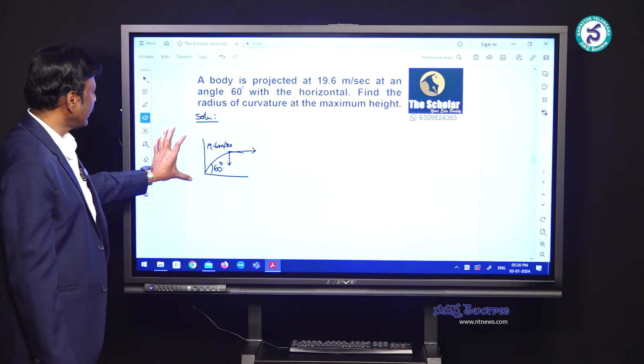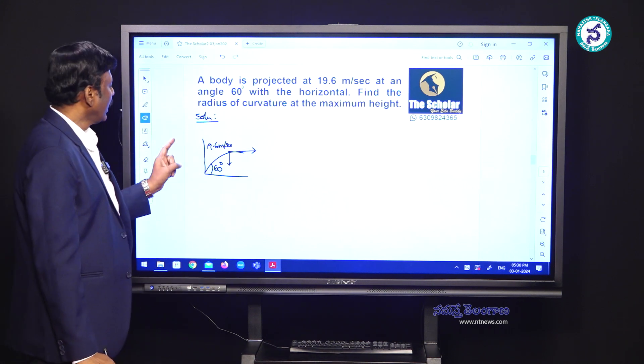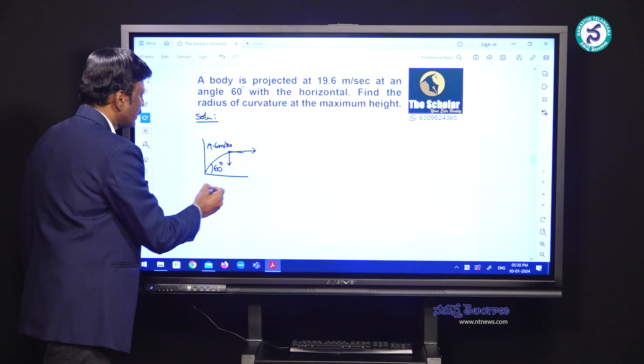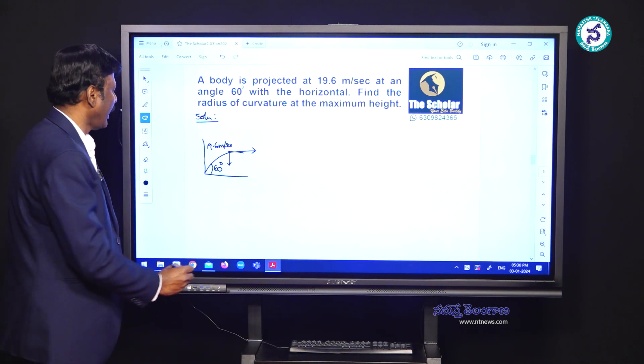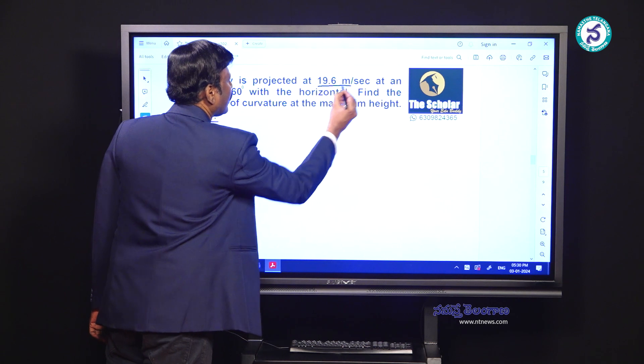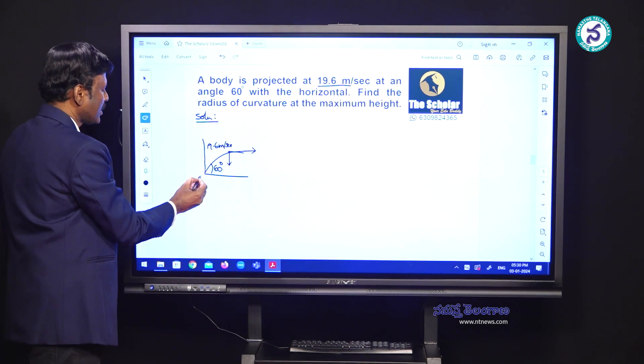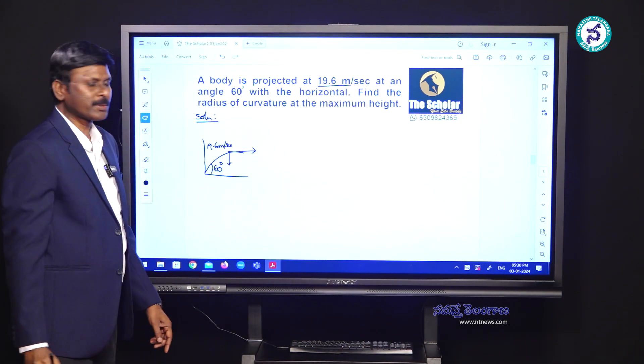Now, the same numerical can be depicted in pictorial form like this. Let this be the horizontal surface and this is the vertical plane. The body is projected with a velocity 19.6 meter per second making an angle 60 degrees with the horizontal.